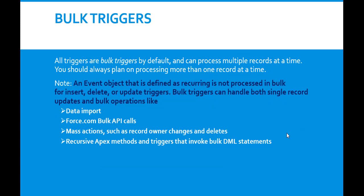All triggers are bulk triggers by default and can process multiple records at a time — you must always plan on processing more than one record at a time. An important point: an event object defined as recurring is not processed in bulk for insert, delete, or update triggers. Bulk triggers can handle both single record updates and bulk operations such as data import, Force.com Bulk API calls, mass actions like record owner changes and deletes, recursive Apex methods, and triggers that invoke bulk DML statements.